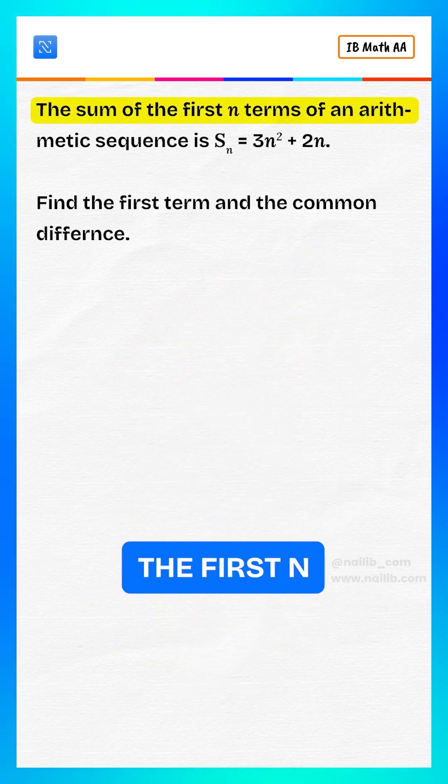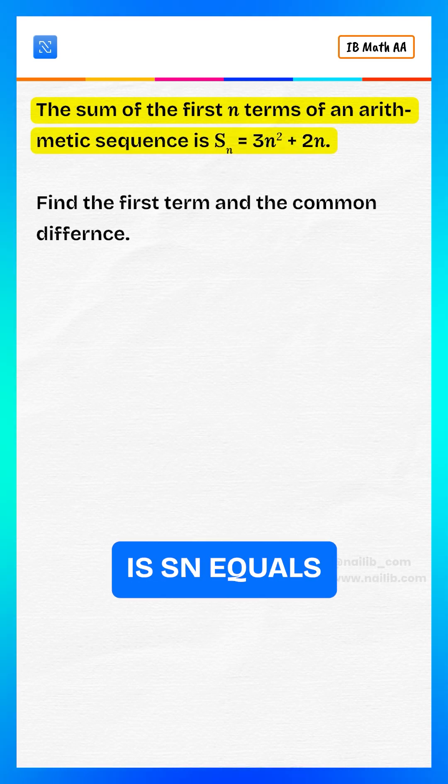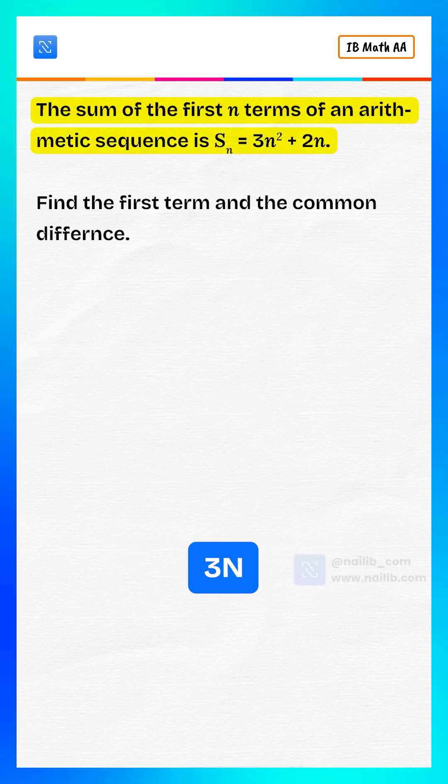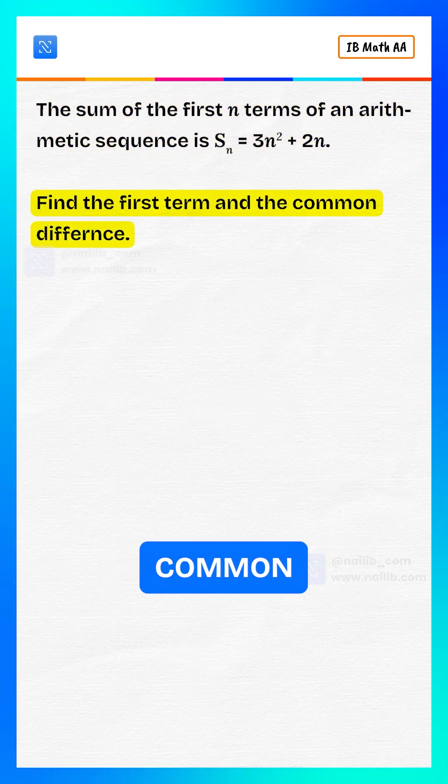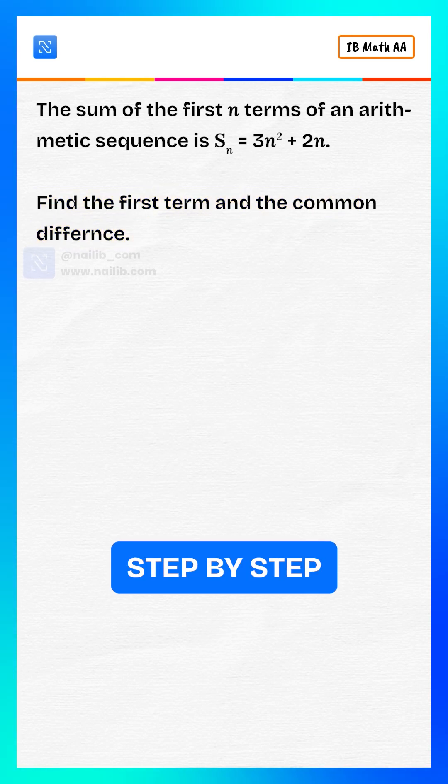The sum of the first n terms of an arithmetic sequence is Sn equals 3n squared plus 2n. We are asked to find the first term and the common difference. Let's solve step by step.